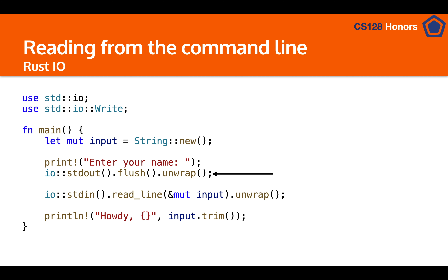We tell the I/O to flush the buffer, which sends out any string currently held there, so anything we've told it to print will actually be printed. Then we call `stdin()` — the standard way to get input — and use `read_line()` to read one line into our `input` variable, which is a string.